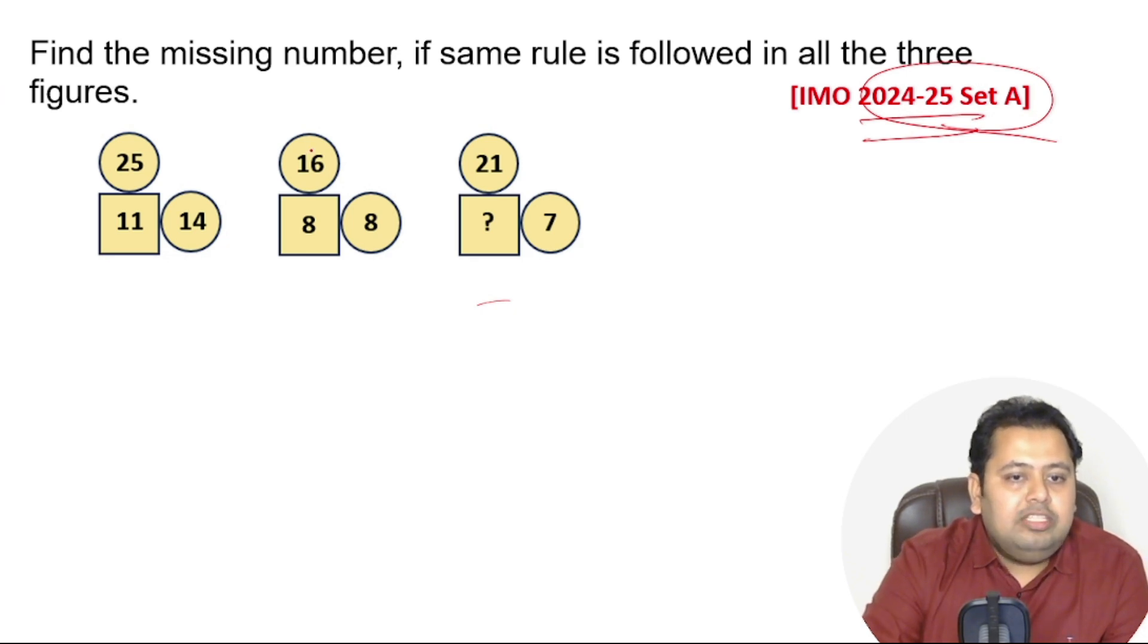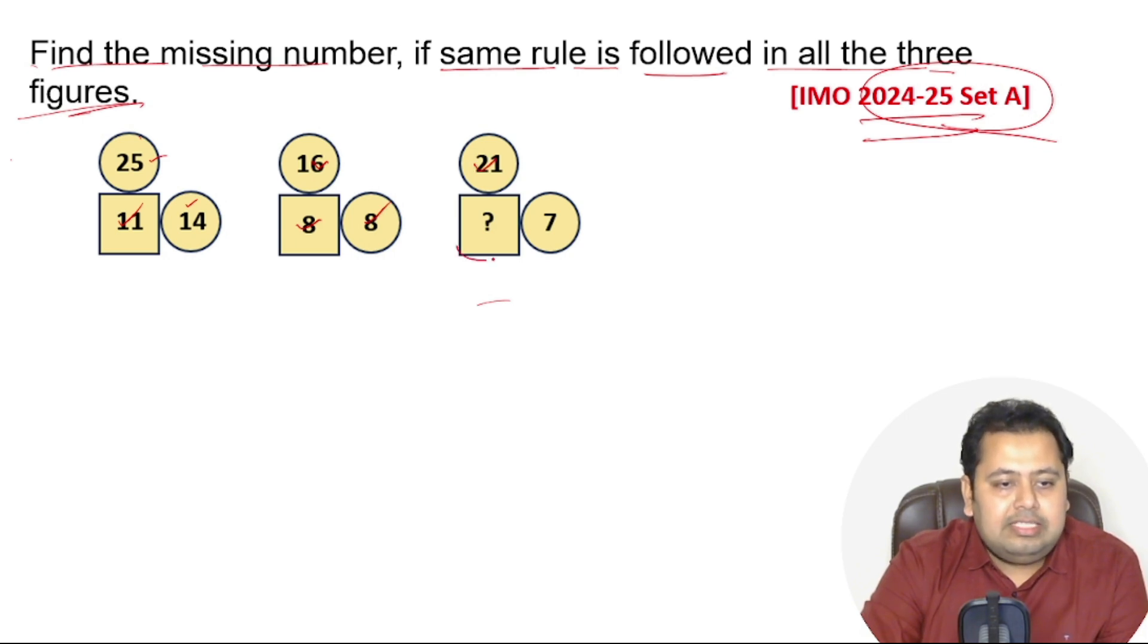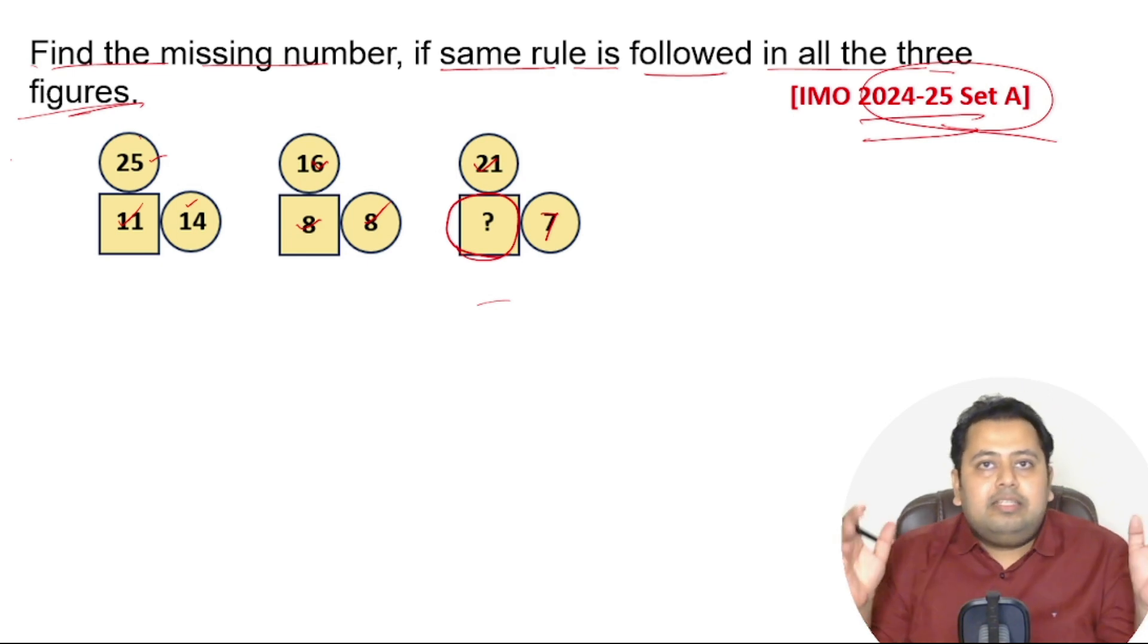Let's go to today's question. Find the missing number if same rule is followed in all the three figures. Now you can see there is 25, this is 14, this is 11. You have 16, you have 8, you have 8. You have 21, this number you have to find out, and then there is 7. So there is a pattern that is being followed. You have to find out what the pattern is.